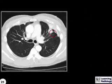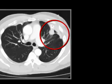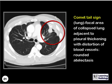What is the name of this sign? This is the comet tail sign, which is from a focal area of collapsed lung adjacent to an area of pleural thickening with subsequent distortion of the blood vessels. It's seen in rounded atelectasis, which is most often due to asbestos-related pleural disease.